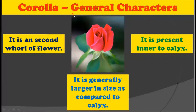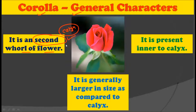Let us start with the general characters of the corolla. It is the second whorl of a flower — we call it second because the calyx is the first and outer whorl. In the picture, you can clearly observe the calyx and above that the very colorful part — the petals — which constitute the corolla. All the red part you are seeing in the picture is the corolla.